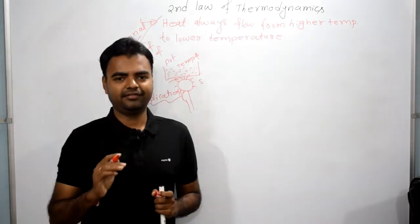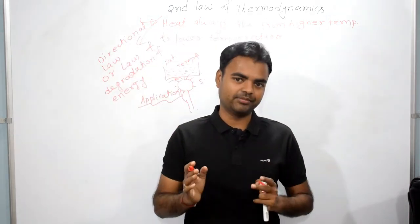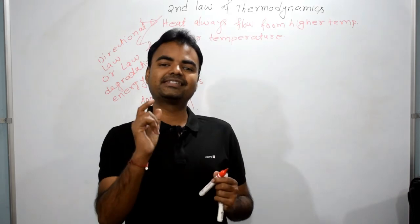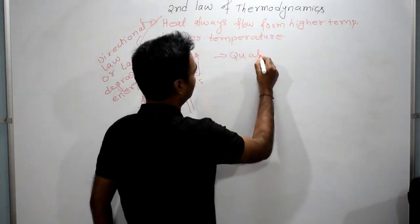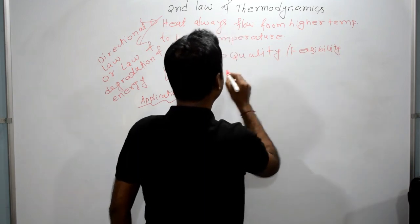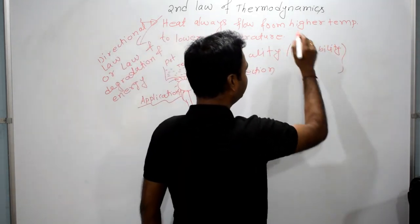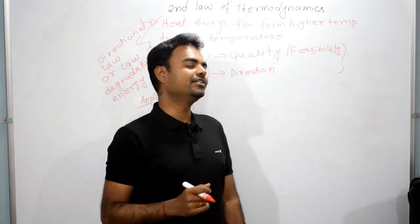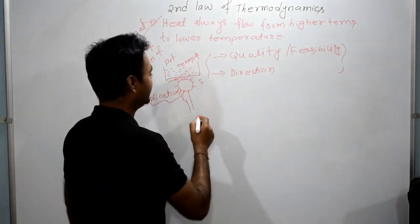Now let's talk about why we study the second law of thermodynamics. The first law has two limitations: it does not address the quality of energy (feasibility) and it does not address the direction of a process. These two limitations of the first law are eliminated by studying the second law of thermodynamics.